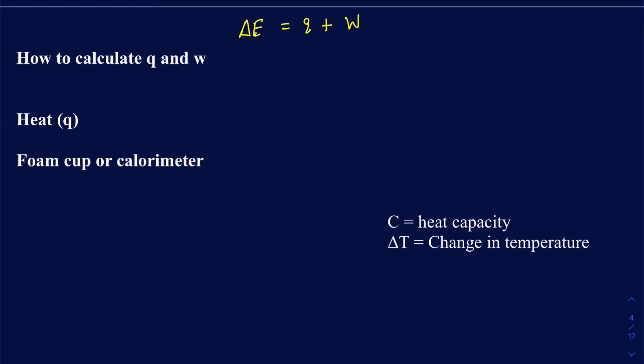In the previous video, we talked about internal energy and the first law of thermodynamics. We said we're going to be calculating quantitatively the value of Q and W. That's what we're going to really talk about — how we calculate Q and W in a chemical reaction. So let's talk about Q first.